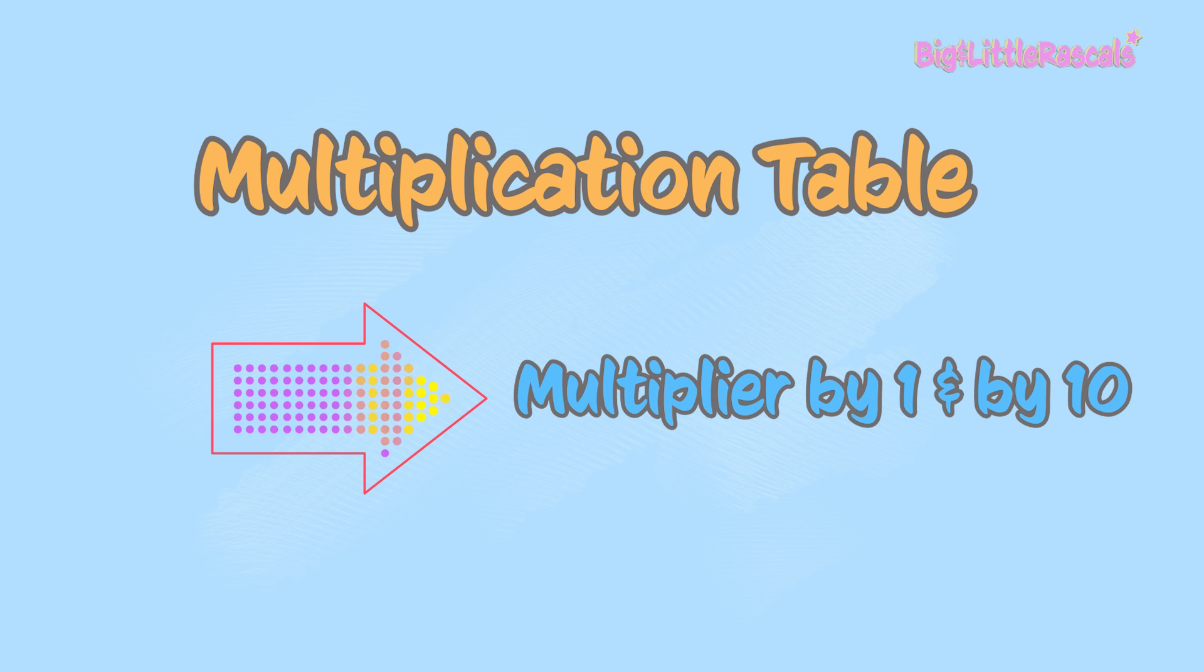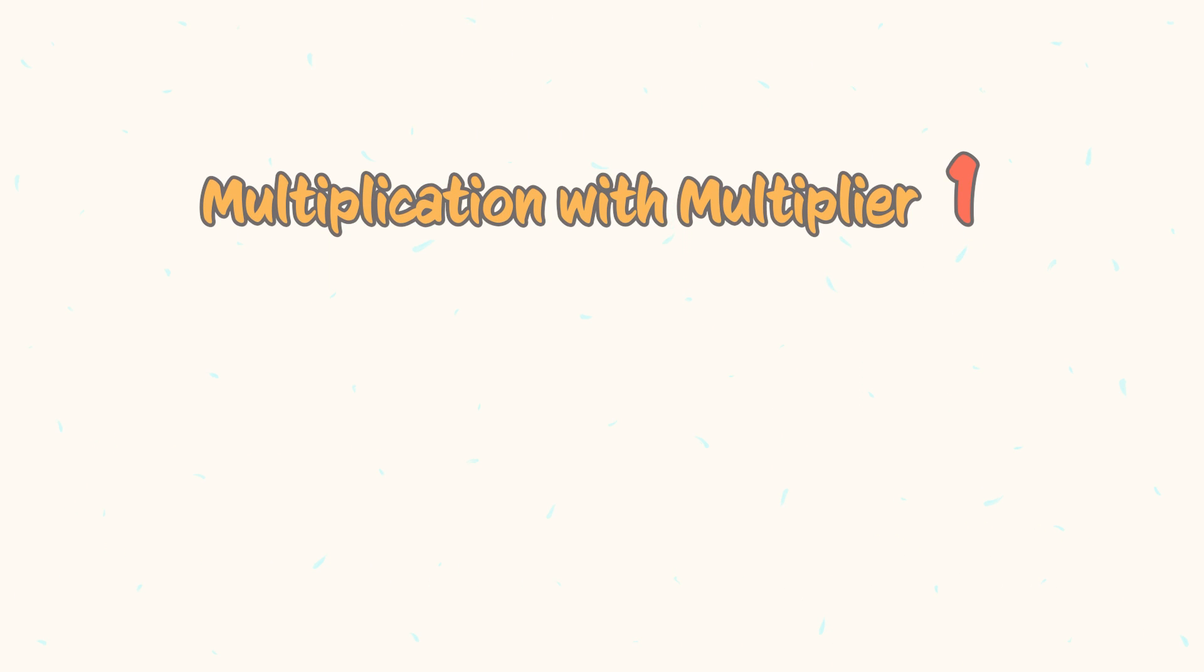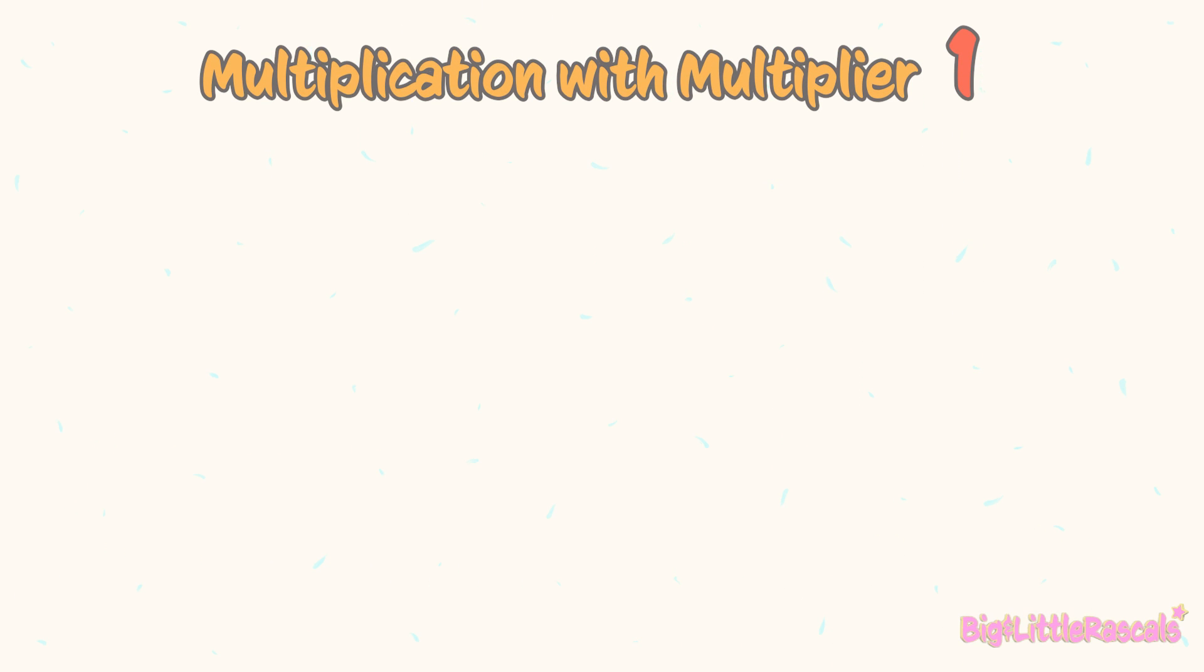Now, let's start going into the multiplication table. Let me brief here first. Multiplication by 1 or by 10 are very simple and we don't have to memorize them. Let's zoom it now. Let's start with multiplication with multiplier 1. Easy!